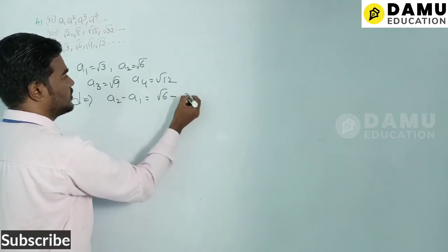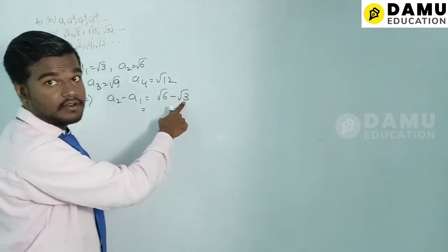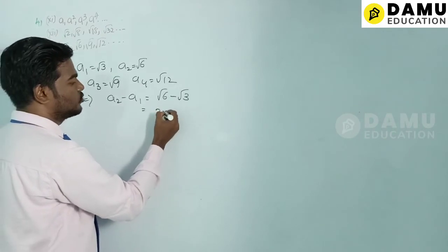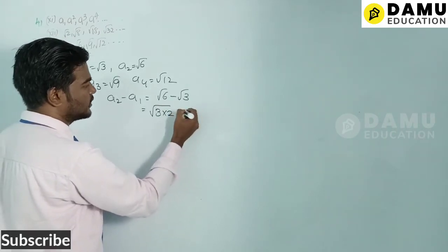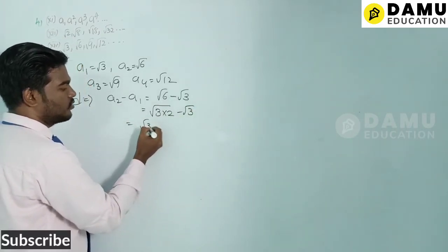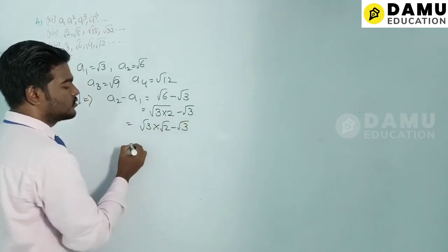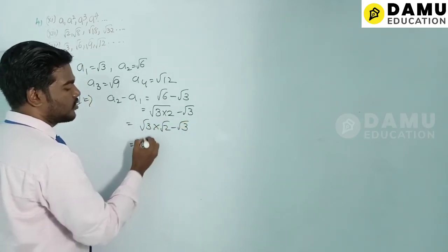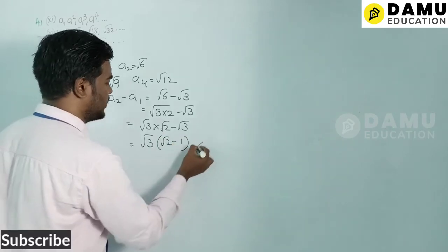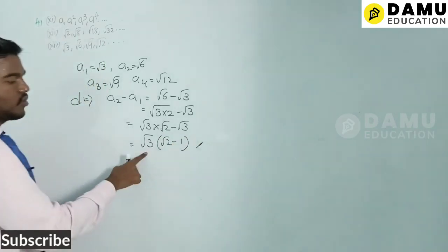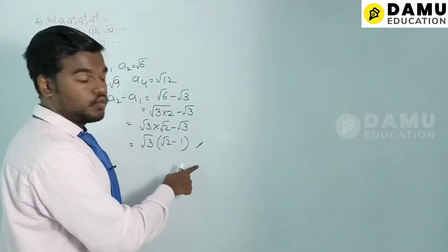Writing √6 = √(3×2) = √3 · √2, we get √6 − √3 = √3(√2 − 1). So the first difference is √3(√2 − 1).